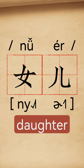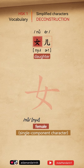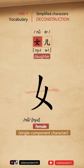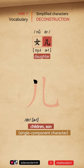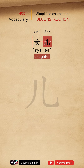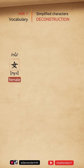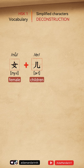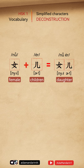女儿, daughter. 女 means female — it's a single component character. 儿 means children or son — it's also a single component character. 女 Female, 儿 Children. 女儿, daughter.